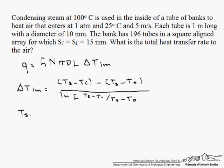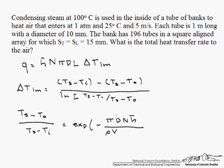We can find T_o from this expression: (T_s minus T_out) divided by (T_s minus T_in) equals the exponential of minus pi times D times N times h-bar, divided by rho times the velocity, times the number of tubes in the transverse direction, times the pitch in the transverse direction, times our heat capacity.